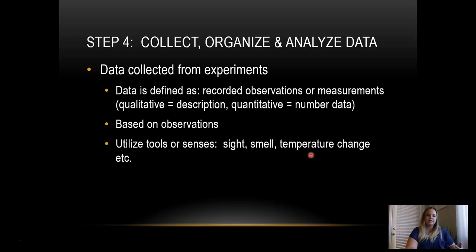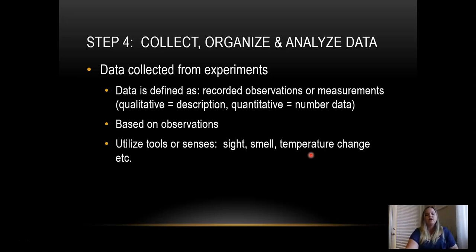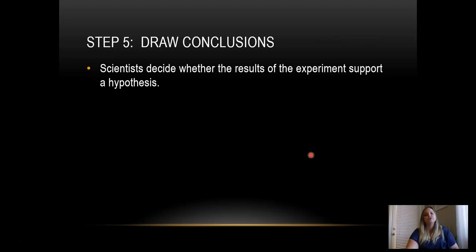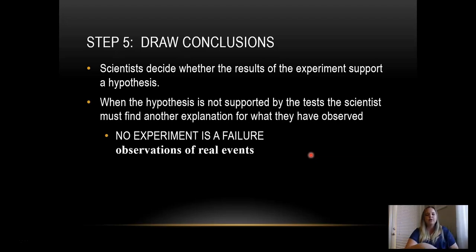Then you collect, organize, and analyze your data. Data is collected from multiple experiments — scientists run the experiment multiple times so they're not basing conclusions on just one result. Multiple experiments are often conducted by different people to avoid observation bias. You organize your data in tables, charts, and graphs for easy analysis. Then you draw conclusions: decide whether the results support your original hypothesis or not. If not, you might find another explanation or rerun some tests.